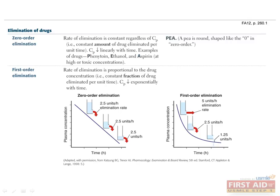In first-order elimination, the rate of elimination is proportional to the concentration of drug in the body. A constant fraction of the drug is eliminated per unit time, resulting in an exponential decrease in plasma concentration. Most drugs are removed from the body by first-order elimination.